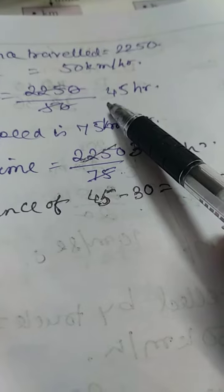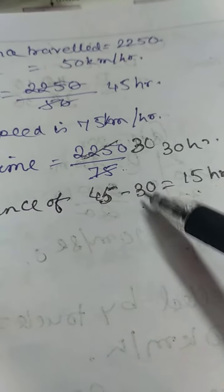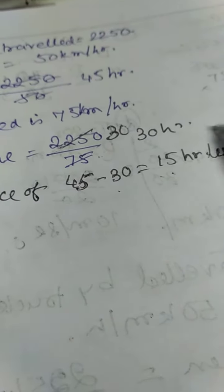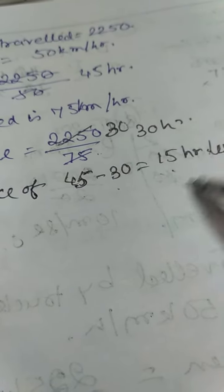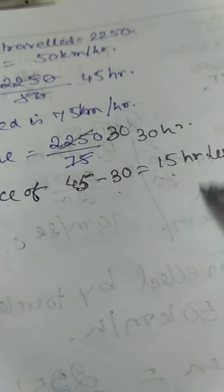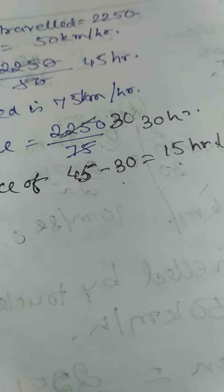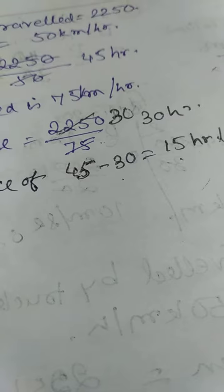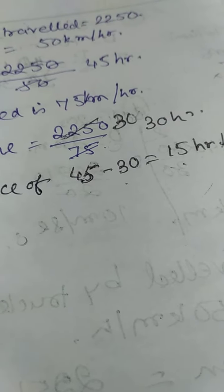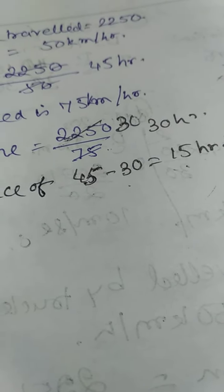First we are finding out the time, then second time, then we are subtracting and we will get how much less time it is taking. 15 hours less it will take. Rest of the sums we are not doing, this much only we will do. So this chapter is finished.